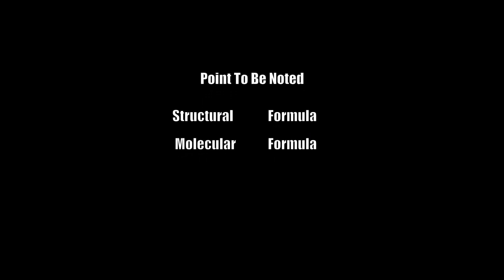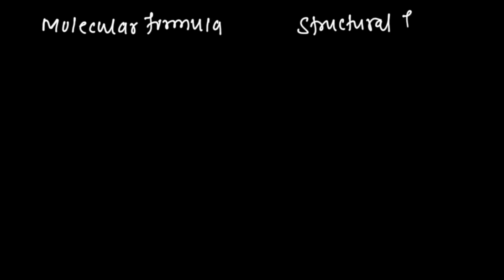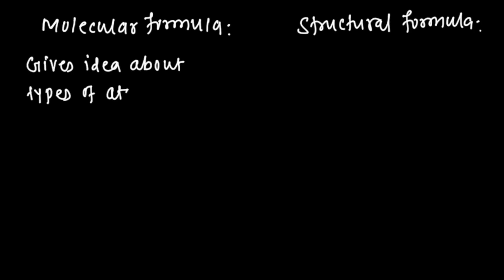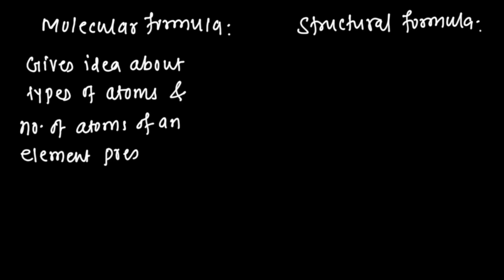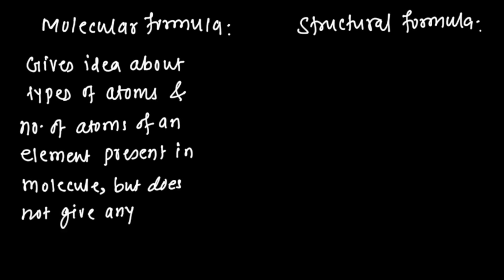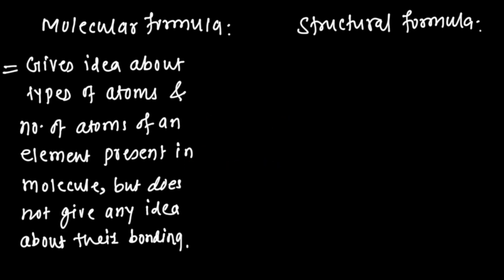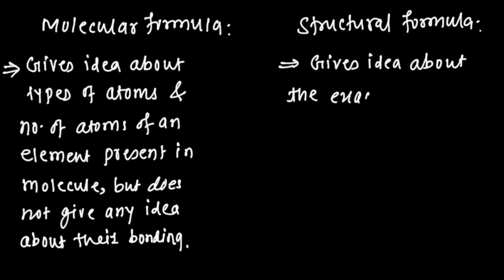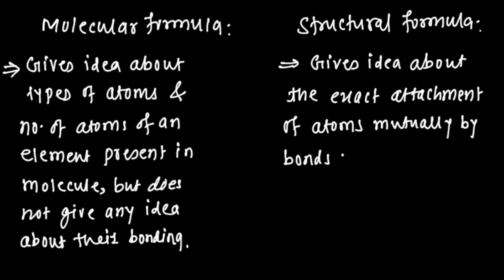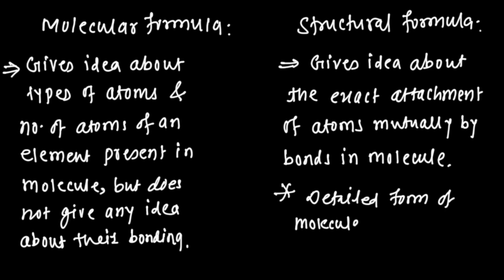So far we have learned about molecular formula and structural formula. Molecular formula gives the idea about the different types of atoms and their number in a molecule, but does not give any idea about their bonding. Structural formula, on the other hand, gives the idea about the exact attachment or bonding of atoms in a molecule — it is a more detailed form.